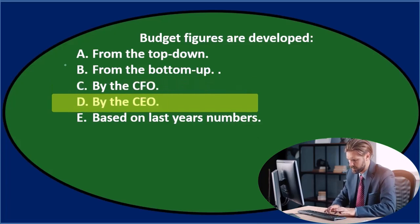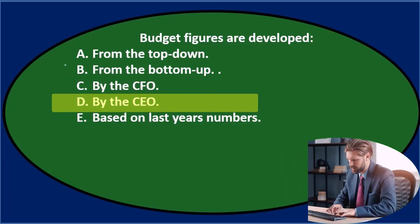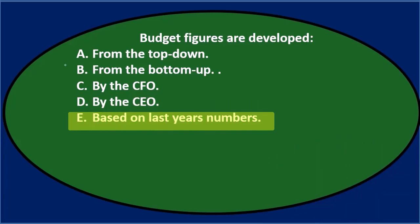And D says by the CEO, chief executive officer, another big person in the company, seems kind of reasonable. And then E says based on last year's numbers. And we know that that's kind of the starting point of the budget. So the first one I'm going to remove is going to be E here, however.